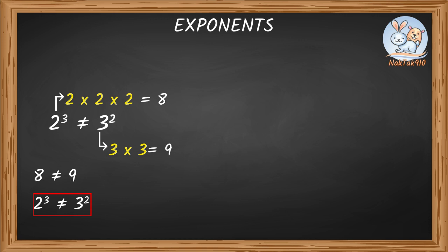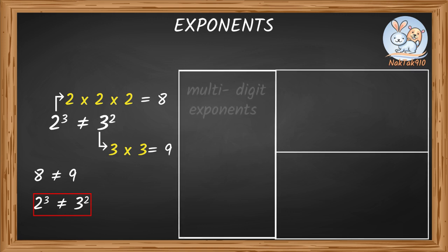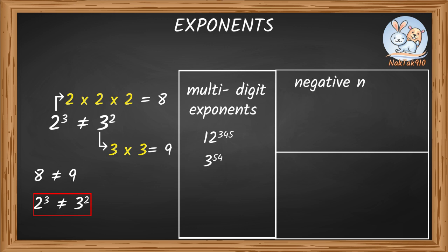In the examples we've seen so far, we've only had one-digit exponents. Can exponents be more than one digit? Exponents can be any number — for example, 12 raised to the power of 345, or 3 raised to the power of 54. Can exponents be negative numbers? Of course! We can have negative exponents, like 4 to the power of negative 3, or 7 to the power of negative 2. That means 4 to the power of negative 3 equals 1 over 4 cubed, and 7 to the power of negative 2 equals 1 over 7 squared.